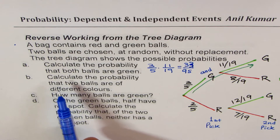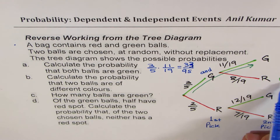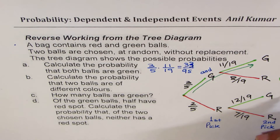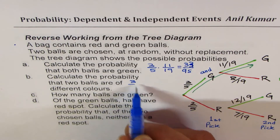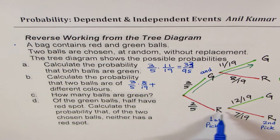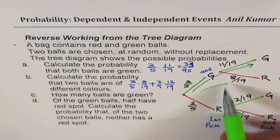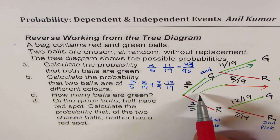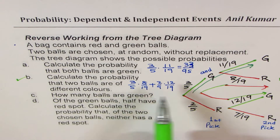Part B: calculate the probability that two balls are of different colors. It could be green and red, or red and green — those are the two paths making different colors. So the answer is 3 over 5 times 8 over 19, plus 2 over 5 times 12 over 19. These two paths cover green followed by red, or red followed by green. Use your calculator, add them up, and find the answer.